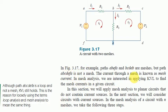The current through a mesh is known as mesh current. In mesh 1 the current is I1, and I2 is the mesh current for mesh 2. In mesh analysis, we apply KVL to find the mesh currents. In nodal analysis, we apply KCL to find the node voltages.